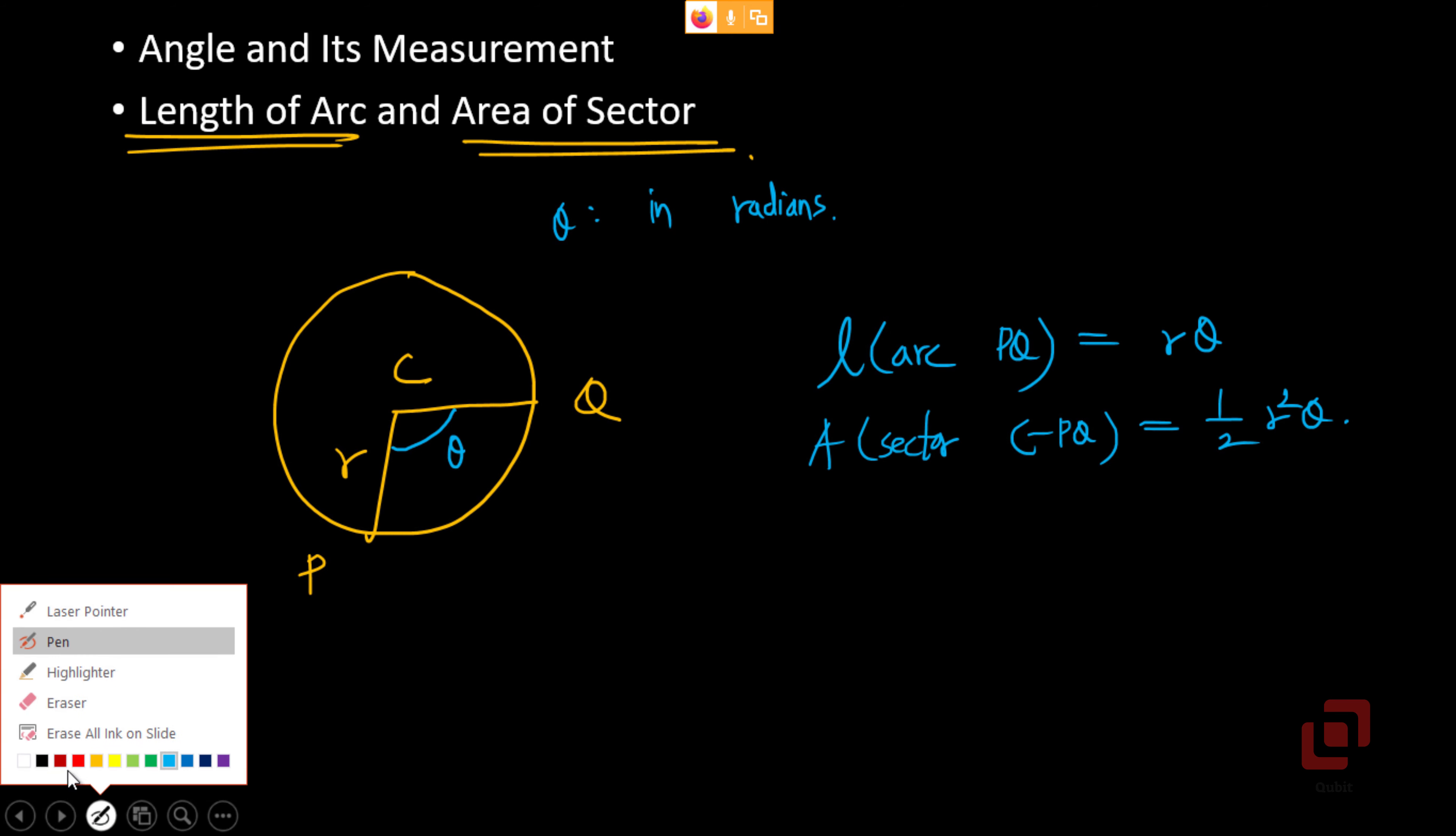And area of the sector CPQ is given by 1 by 2 r squared theta. Let me highlight the area in white color now. So this sector is like piece of pizza. Larger the angle subtended at the center, more the amount that you will get to eat. The third formula is perimeter of sector. And the perimeter of the sector is equal to r plus r theta plus r, which is r times 2 plus theta.